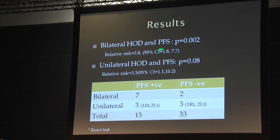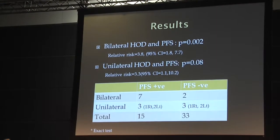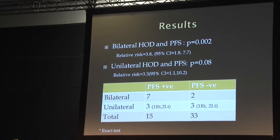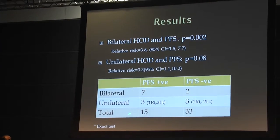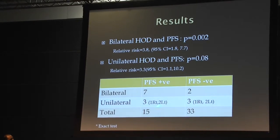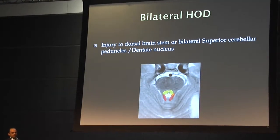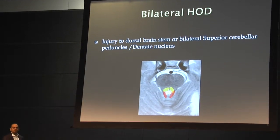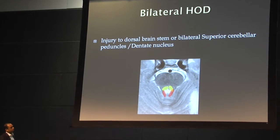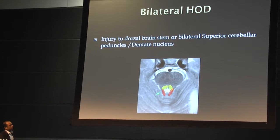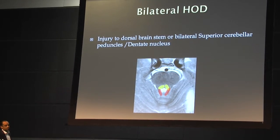An interesting finding was that bilateral hypertrophic olivary degeneration had significant correlation with posterior fossa syndrome, but not the unilateral cases. Among the unilateral cases, there was no difference between right or left side resulting in posterior fossa syndrome. So what does bilateral olivary degeneration constitute? It could be injury to the dorsal brainstem, or an extensive injury involving bilateral superior cerebellar peduncles and dentate nuclei.